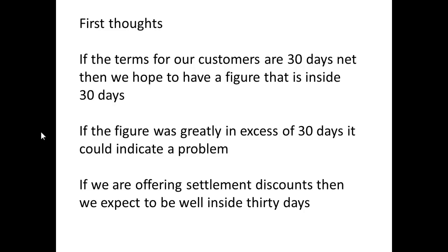If we give all our customers 30 days net as their terms — in other words we expect to be paid within 30 days — then we would hope the ratio gives a figure inside 30 days. If the figure were outside 30 days, say 38 or 48 days, that could indicate a problem, meaning many customers are paying late. If we offer settlement discounts, we would expect to be well inside 30 days, because the idea is to get customers to pay early.